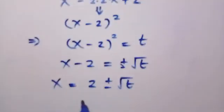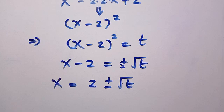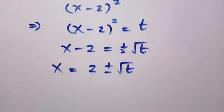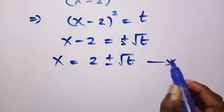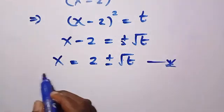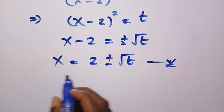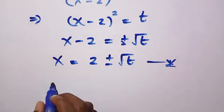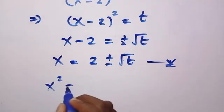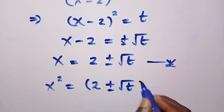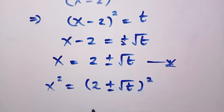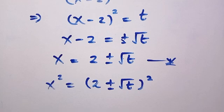From the right-hand side of the given problem we have x squared, so I want to get x squared by squaring both sides. Squaring gives us (2 plus or minus the square root of t) all raised to the power of 2. This gives us x squared.